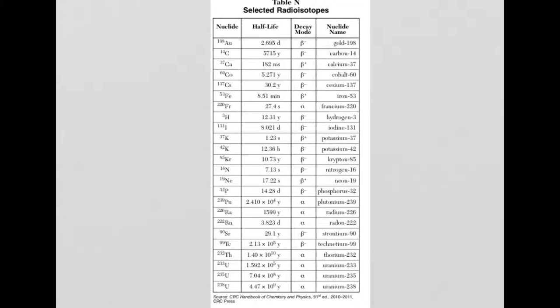Let's take a look. Reference table N under selected radioisotopes. Notice there's a column for decay mode. Now the decay mode is different depending on the radioisotope.